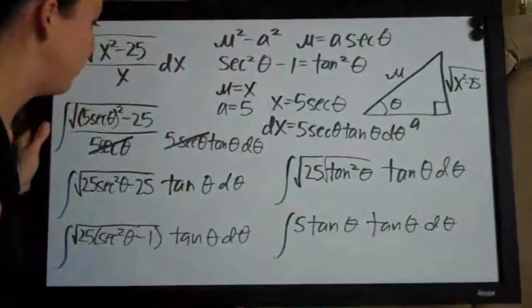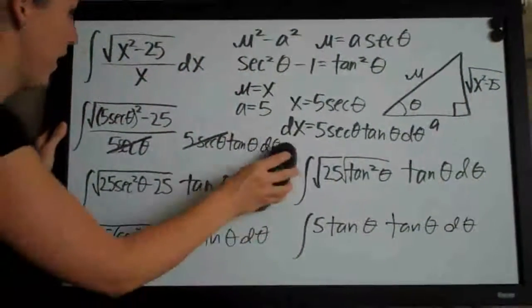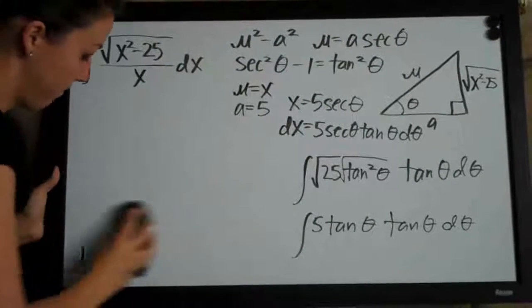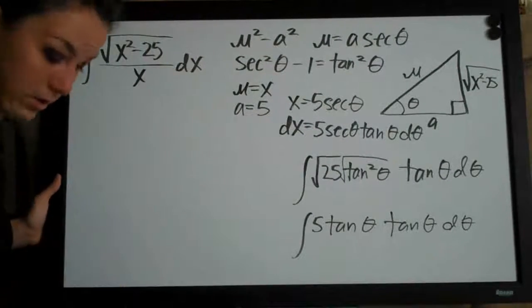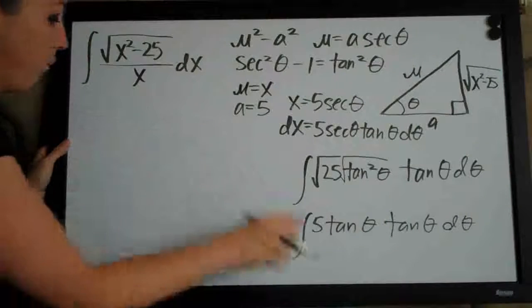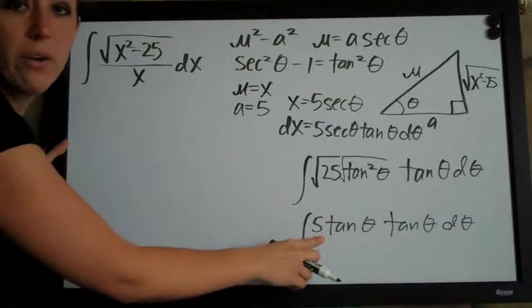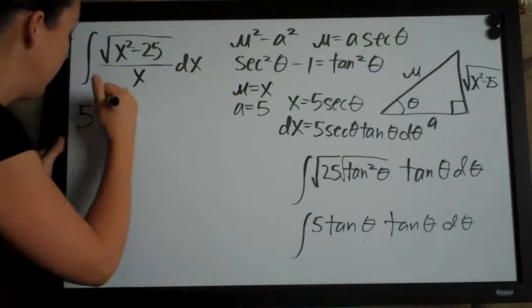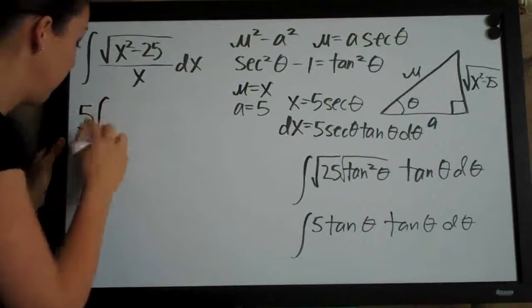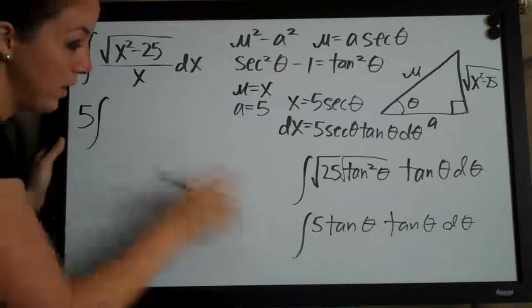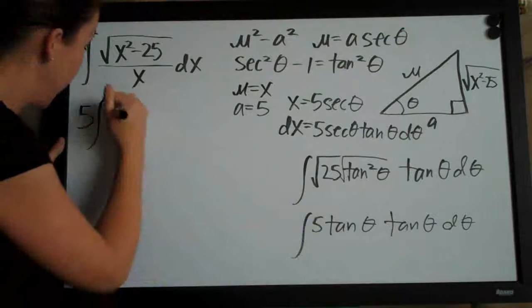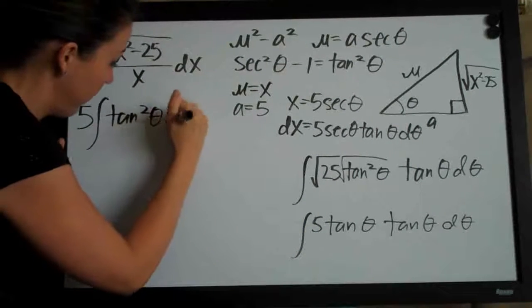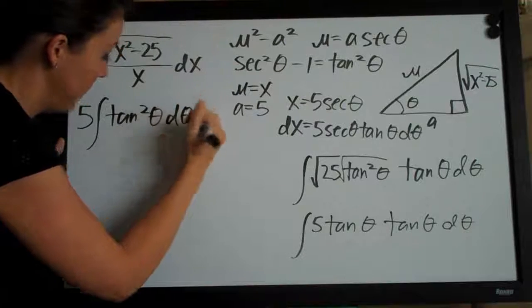This simplifies to 5 out in front of the integral as a coefficient, and then we just have tangent squared theta d theta.